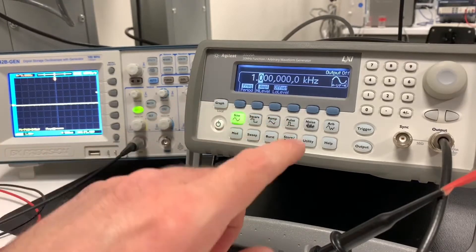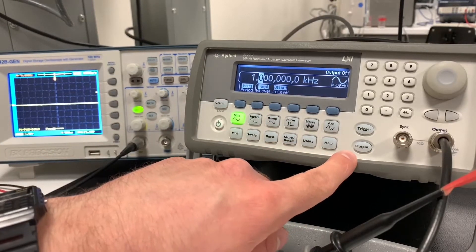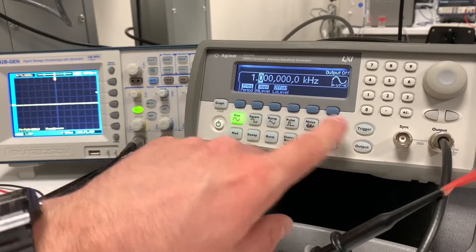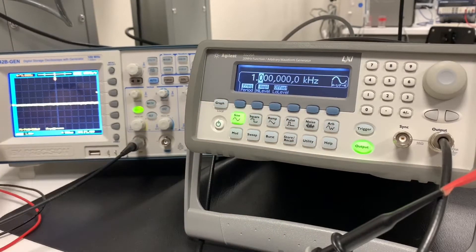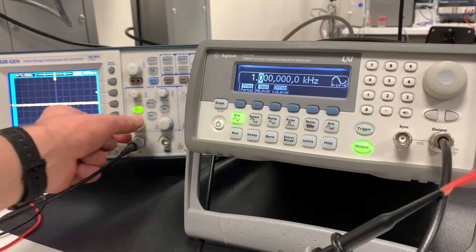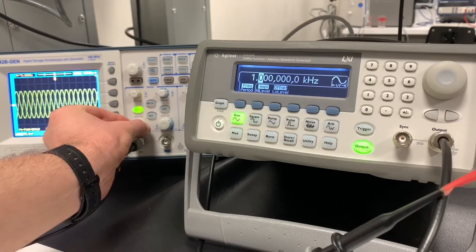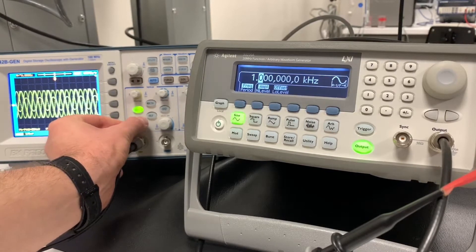Now I can press output, which enables the output of this machine. So if I press that, it turns on. But you can see here, this oscilloscope doesn't really show much of anything. That's because the signal that the function generator is putting out is pretty low.